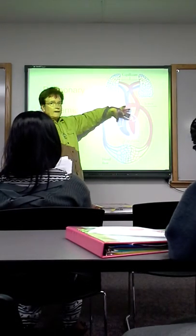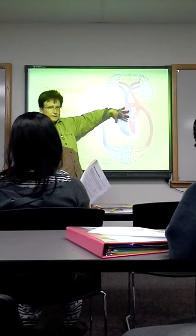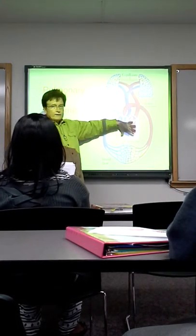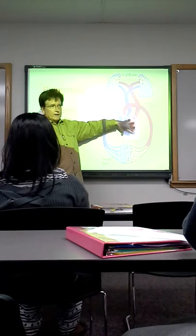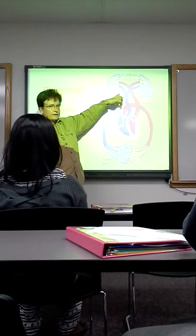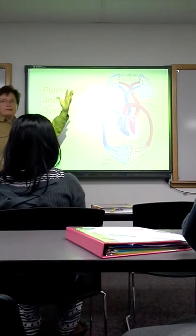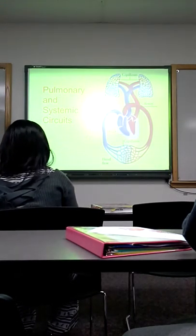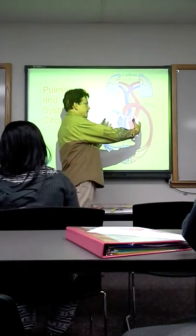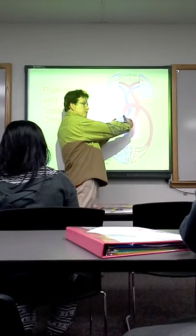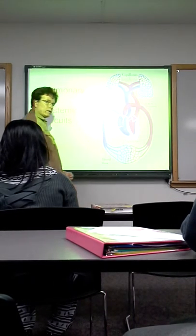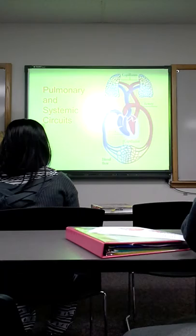There is the right pump, shown in blue, also known as the pulmonary pump, because it pumps its blood to the lungs. And then there is the left pump, usually called the systemic pump, because it pumps its blood to all the other organs of the body except the lungs, organs that are referred to as the systemic organs.